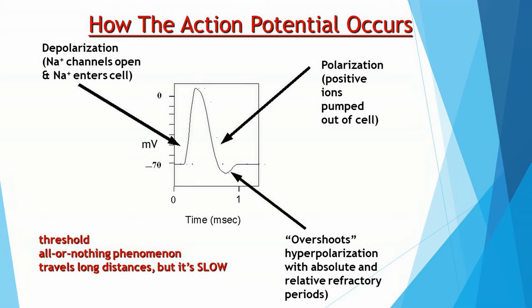I've put some terms on the screen that I'm not actually going to test you on: depolarization, polarization, hyperpolarization. But if you learn these words, it may help you understand how the action potential occurs. The cell at rest is at minus 70 millivolts. As a neural signal occurs, it's becoming more positive inside than outside — it was polarized, now it's becoming depolarized. Then positive ions are pumped out and it's becoming more and more negative inside than outside, so it's polarizing again — getting ready to do more work.